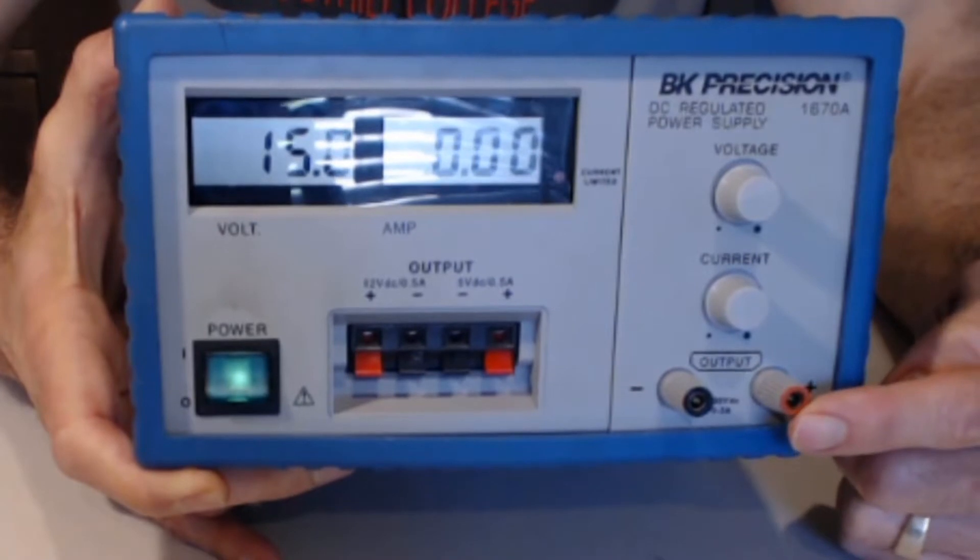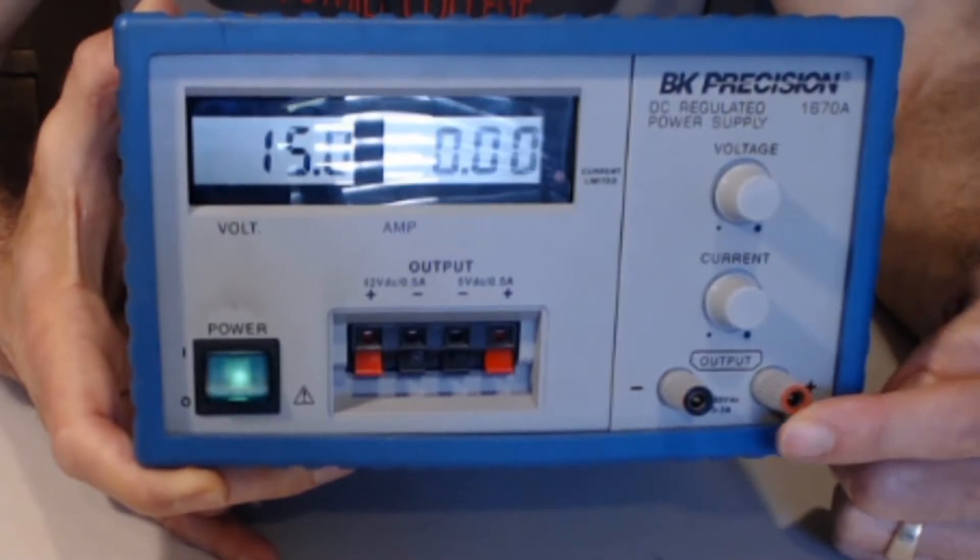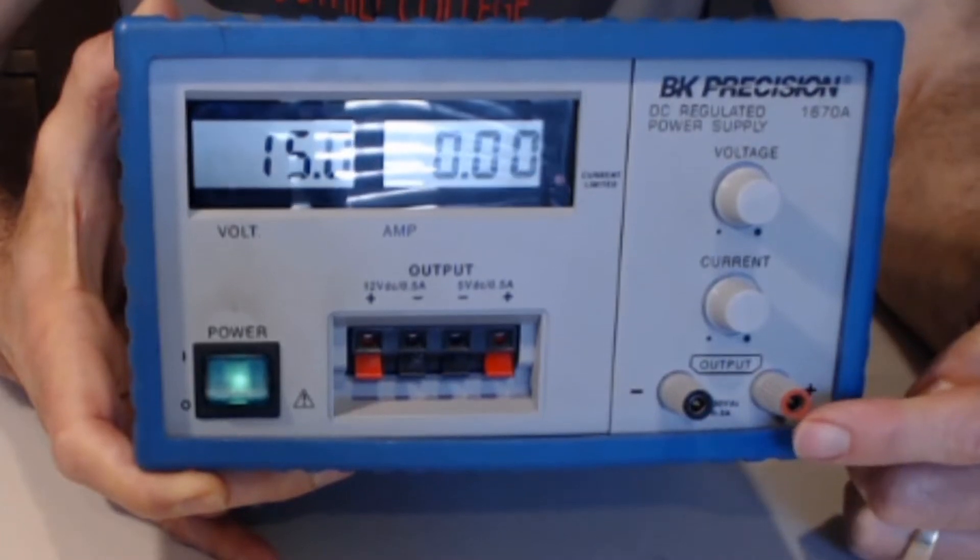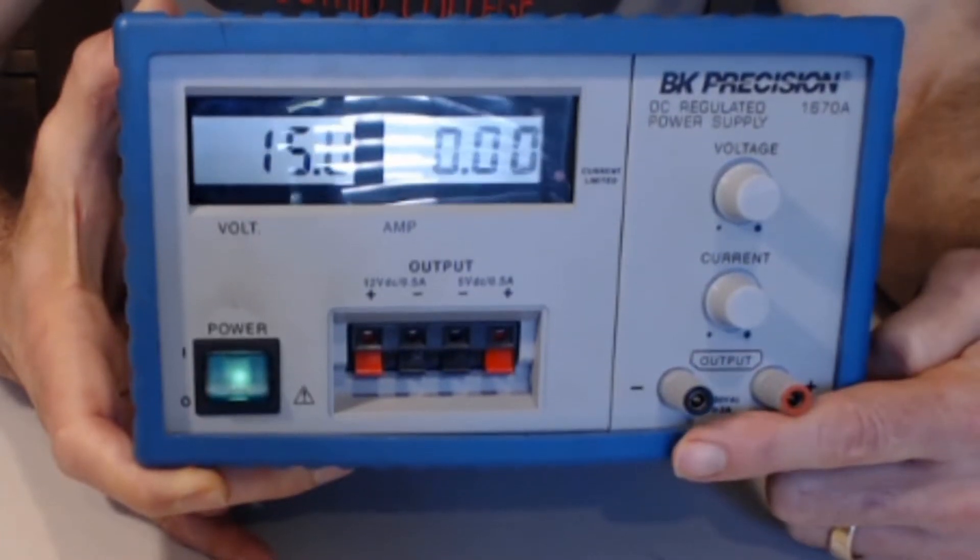So the red one is 15 volts higher than the black or negative side. The positive side is 15 volts higher than the negative side.